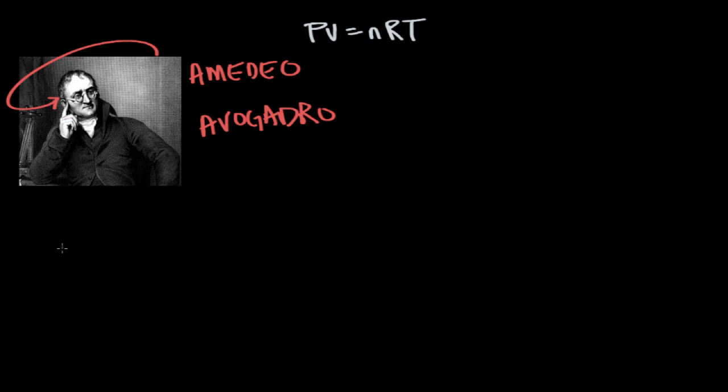Amadeo spent a bit of his time experimenting with tiny particles. In honor of his experiments, the number of particles in one mole of something was named Avogadro's number, which is approximately 6.02 times 10 to the 23.